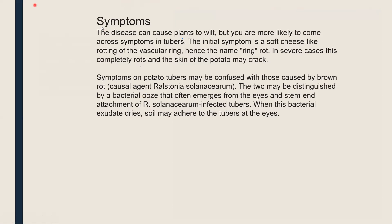This disease causes plants to wilt — it appears as though there is a very reduced supply of water. You are more likely to come across symptoms in tubers. In severe cases, the vascular ring completely rots and the skin of the potato may crack. That is why we term it as ring rot.